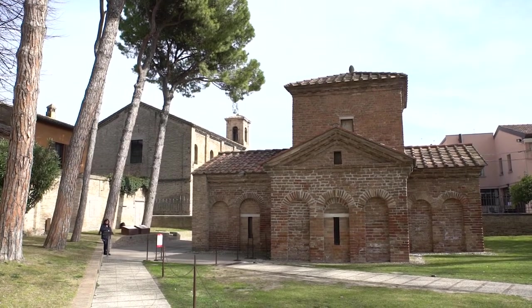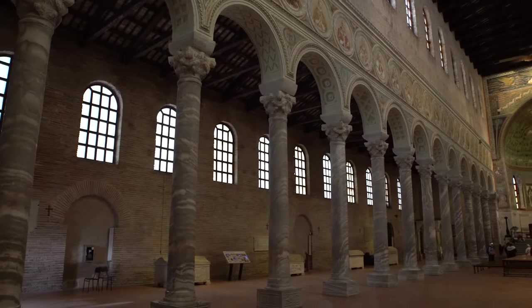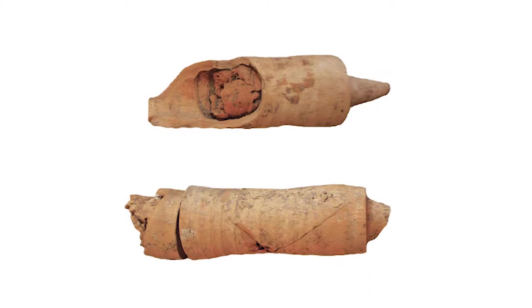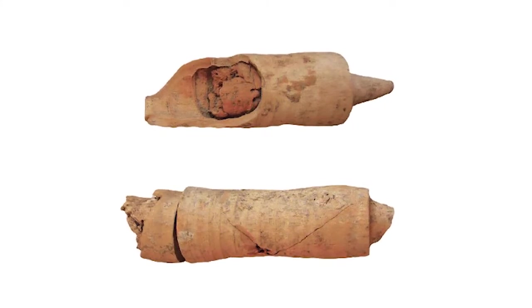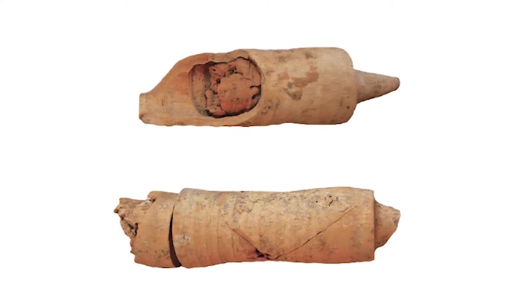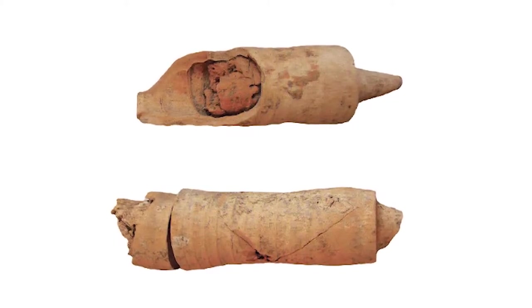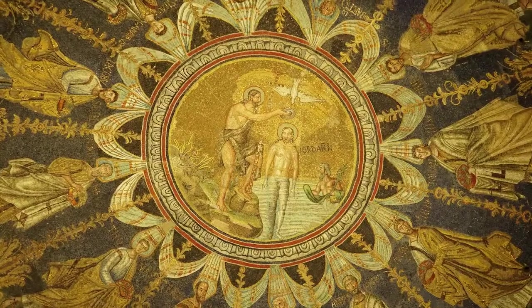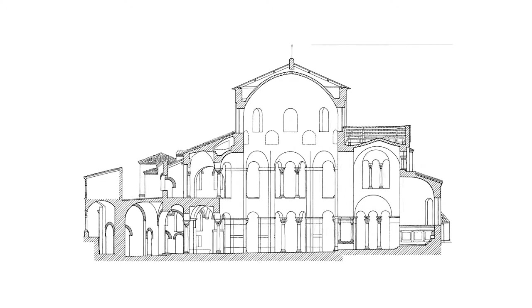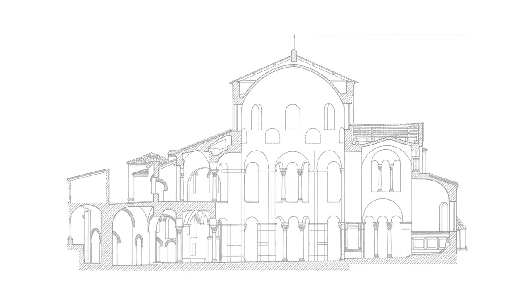Flat longitudinal roofs, such as those of the basilicas, were usually a structure of timber trusses, whereas the domes were usually made with clay tubes. This was a building system typical of the Roman and Western world, consisting of hollow clay elements arranged in concentric circles, thus defining the geometry of the dome. Among the earliest examples of such a structure are the apse of the Basilica Ursiana and the dome of the Neonian Baptistry. The same technique was also used in the following century to build the great dome of the Basilica of San Vitale.